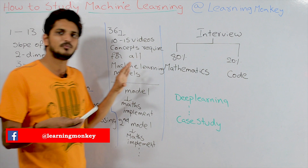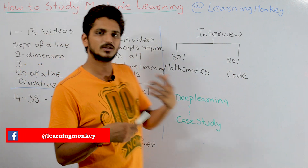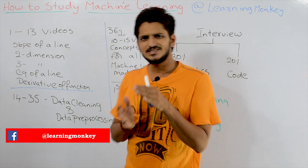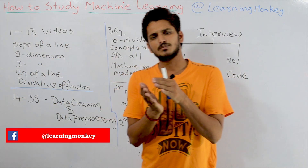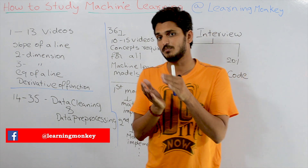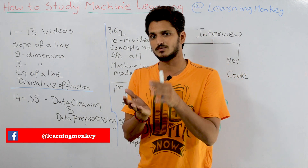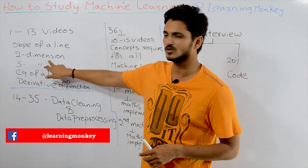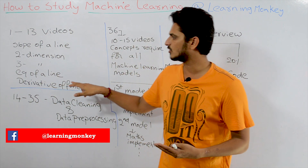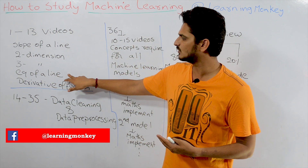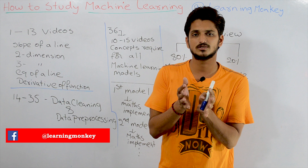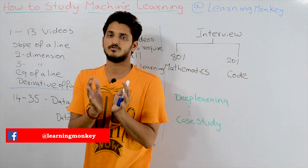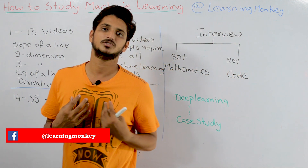The mathematics we need is the basic mathematics learned in plus 1 and plus 2: slope of a line, 2-dimensional coordinate system, 3-dimensional coordinate system, equation of a line, and derivative of a function. These basic concepts are enough for understanding machine learning.